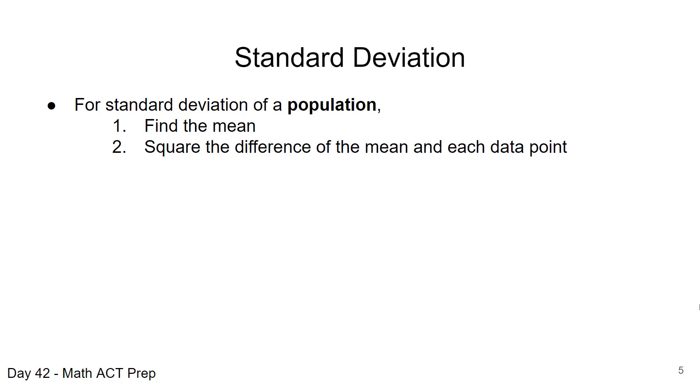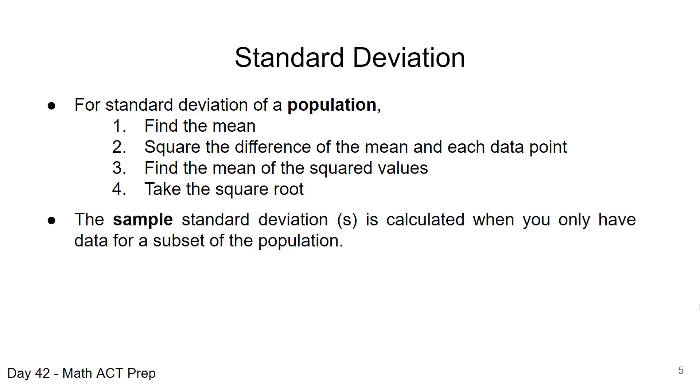So we're taking each data point, subtracting it from the mean, and squaring it. And then we'll find the mean of those squared values, take the square root, and that's how we'll find the population standard deviation.